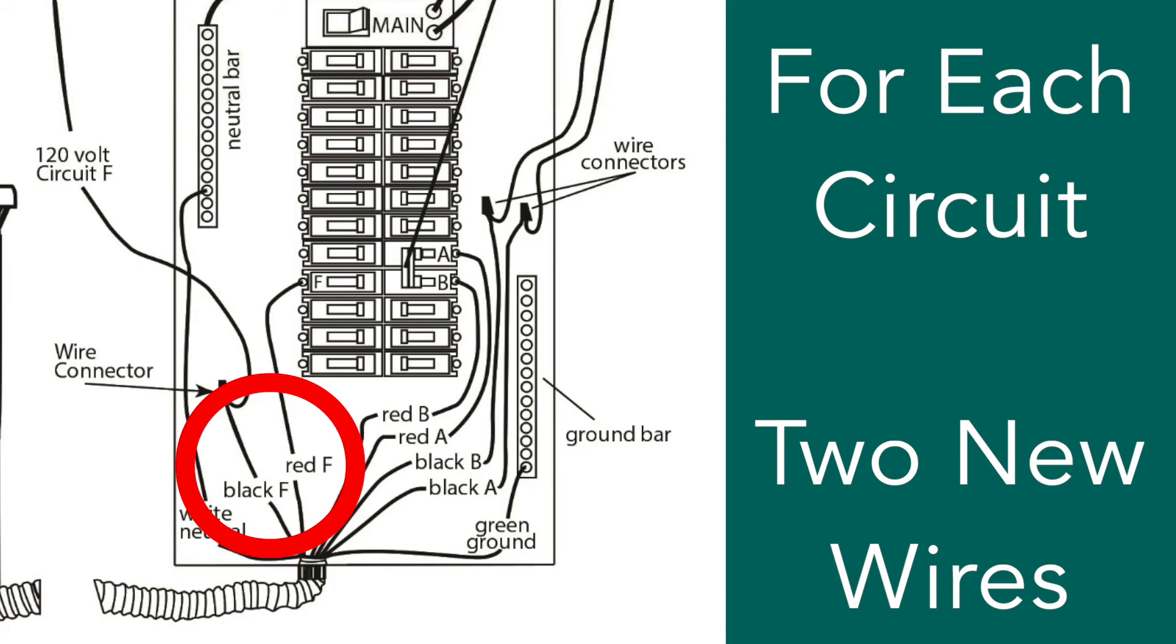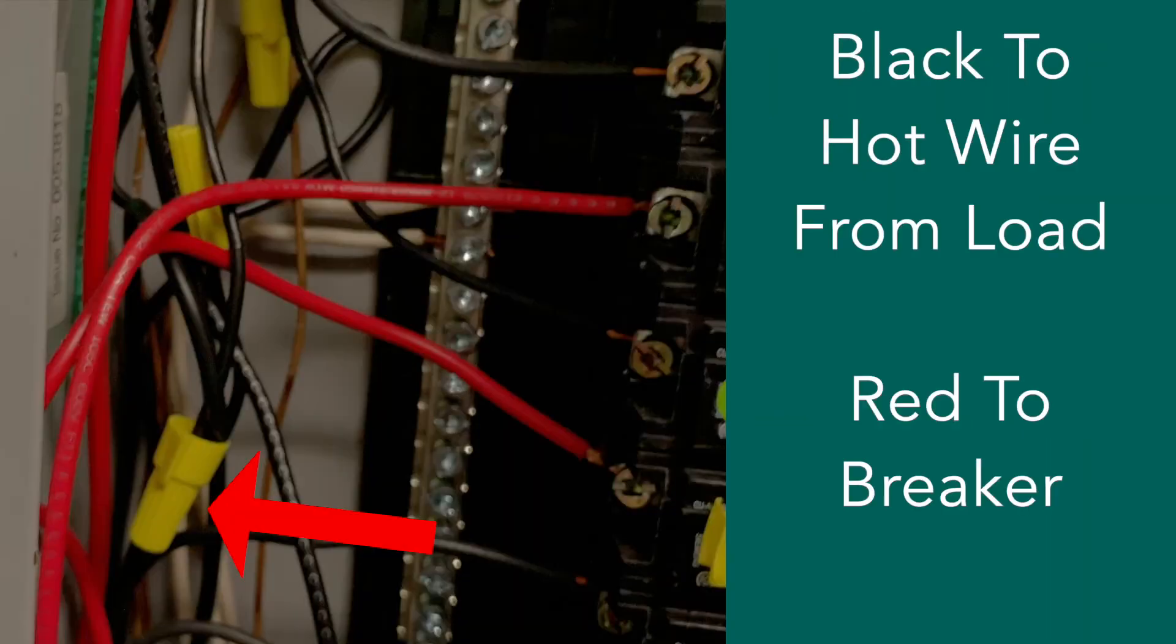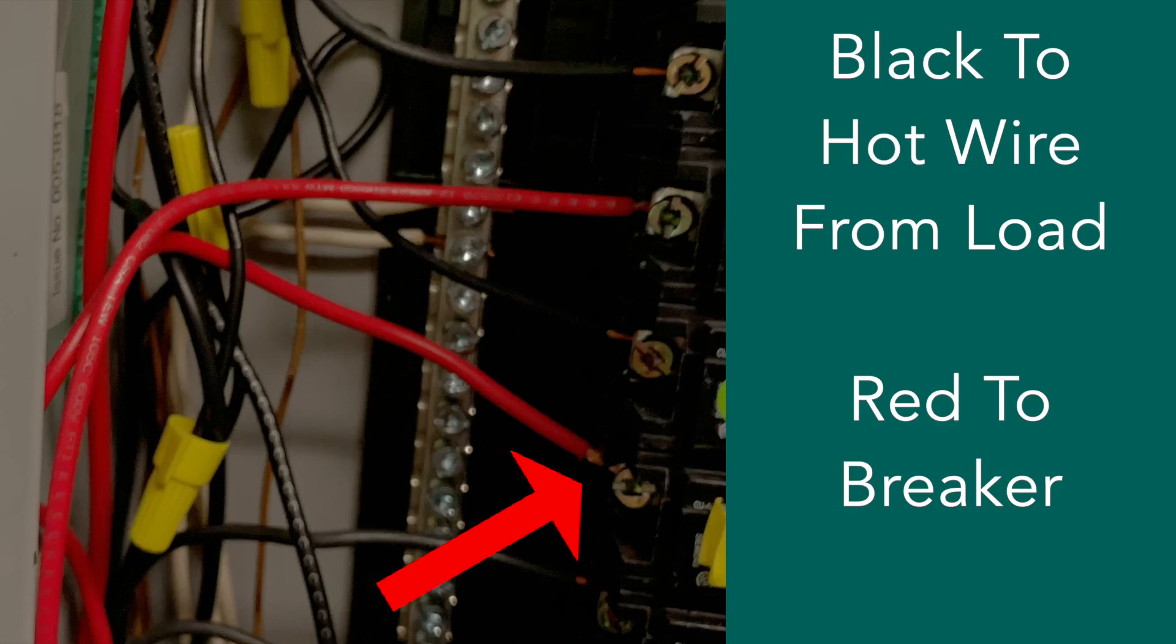So for each of the six circuits in the transfer switch, A, B, C, D, E, and F, you have two new wires. In this case, they are for F. And the black wire connects to the hot wire from the load. The red wire connects to the breaker.